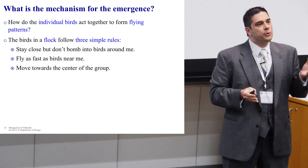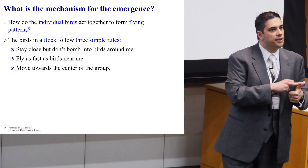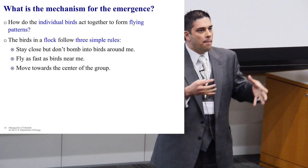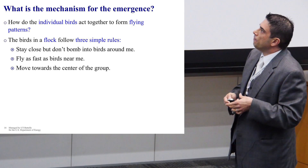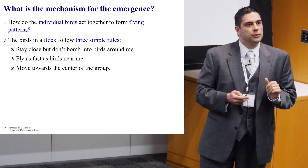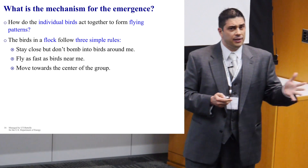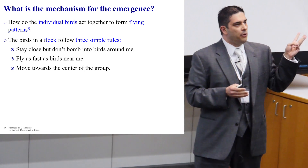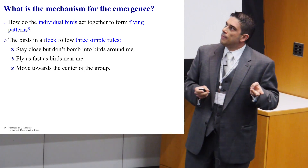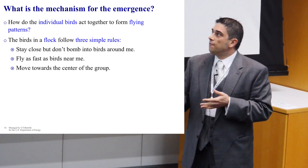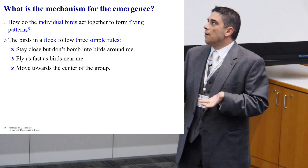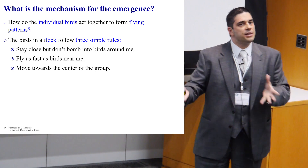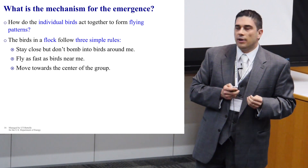In order to understand complex systems, we need to address two questions: first, what is the interaction between the entities, and then what is the mechanism that produces emergent phenomena based on this interaction? If you look at a flock of birds, you may think there is a bird acting as a leader that sends messages to other birds where to fly. As a matter of fact, the birds follow three rules: stay close but don't bump into birds around me; fly as fast as birds near me; and move towards the center of the group. Following these three rules, they have this emergent phenomena — the flock of birds.